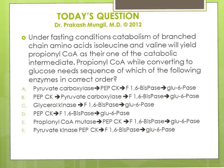Hey everyone, this is Dr. Mungle. Today I'm going to discuss a question based on the gluconeogenesis process. Under fasting conditions, catabolism of branched-chain amino acids isoleucine and valine will yield propionyl-CoA as a catabolic intermediate. Propionyl-CoA, while converting to glucose, needs a sequence of which of the following enzymes in correct order? Options A to F are given with a variety of enzymes, and you need to pick the one that represents the correct sequence.